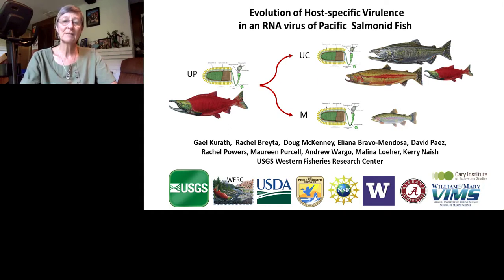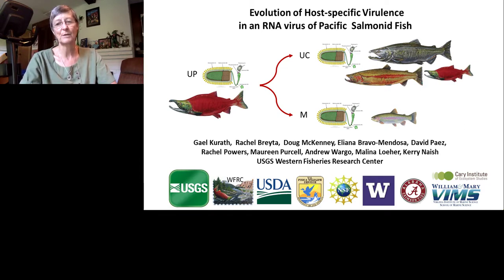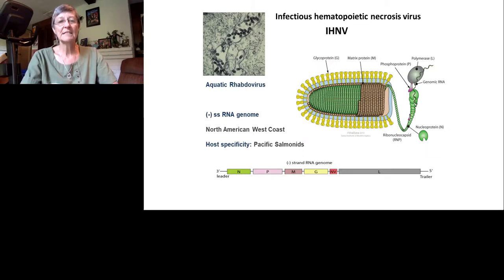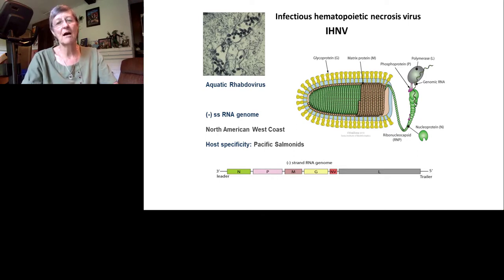The virus I study causes the most significant viral disease in Pacific salmon. This project has been running for three years with many investigators at many institutions. The virus is Infectious Hematopoietic Necrosis Virus, or IHNV — an aquatic rhabdovirus with a single-stranded RNA genome of about 11,000 bases and six genes.